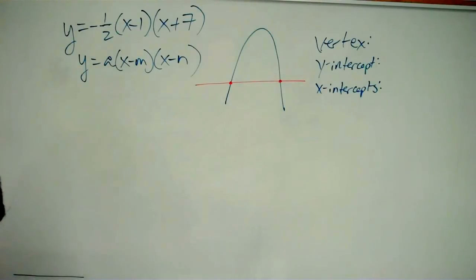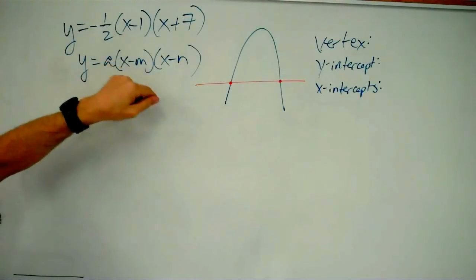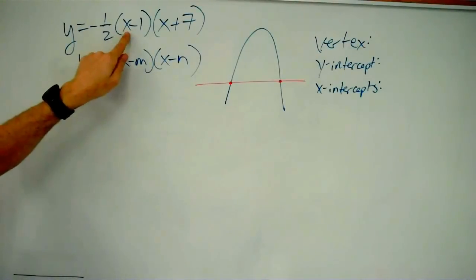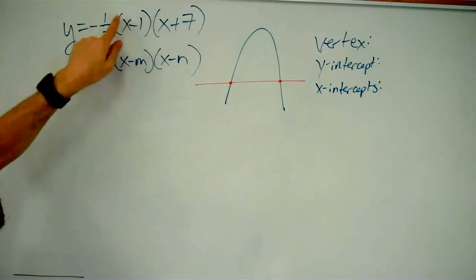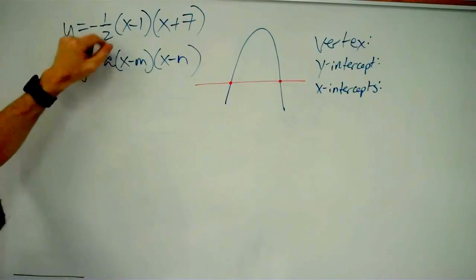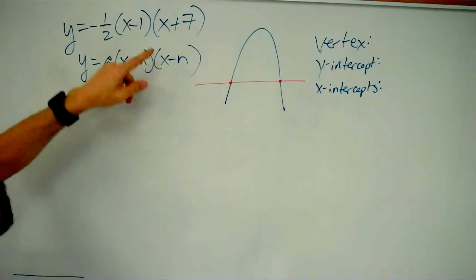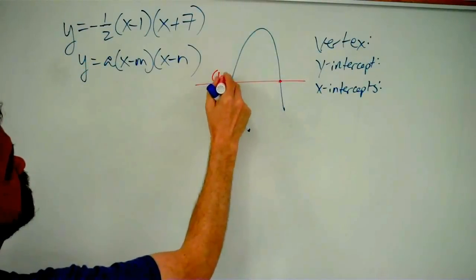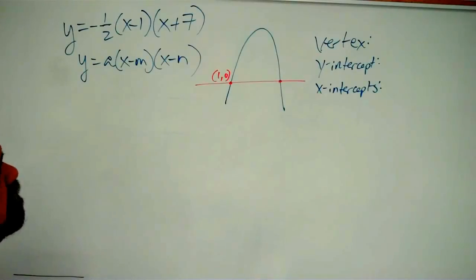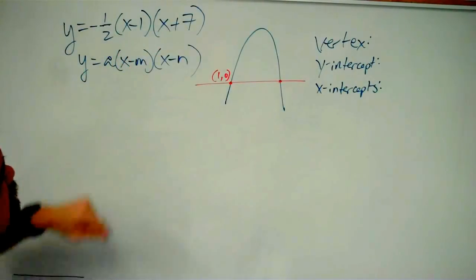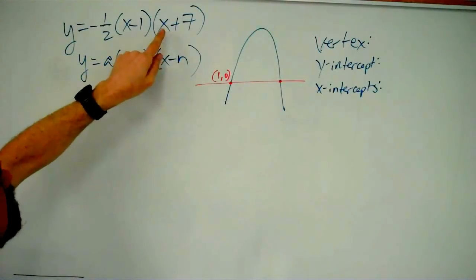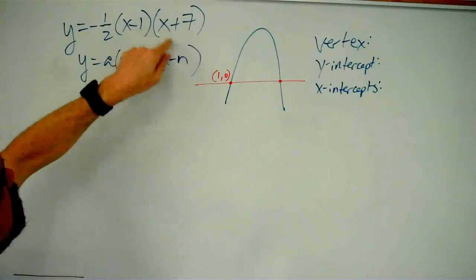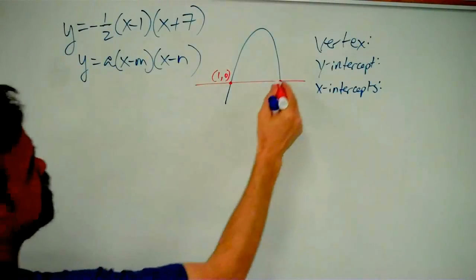So what we have, if I plug in one for x, I have one minus one is zero, and so negative one-half times zero times anything else is going to give me zero. That means one comma zero is one of my x-intercepts. And over here, if I plug in negative seven, I'll get negative seven plus seven is zero times whatever else you have, which will be zero.